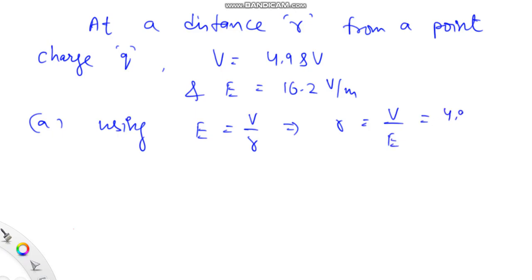This is 4.98 volts divided by 16.2 volts per meter, and finally this r is calculated to be equal to 0.307 meters, or we can say r equals 30.7 centimeters, the answer for the first part.